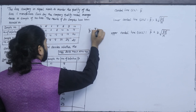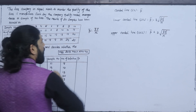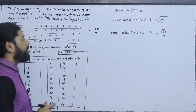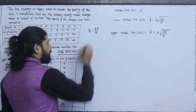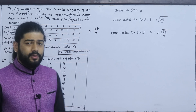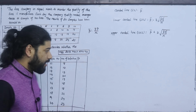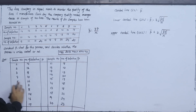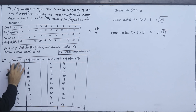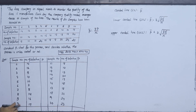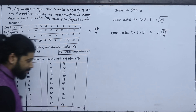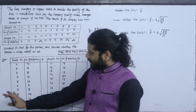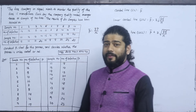P-bar equals the summation of P divided by n. To calculate the proportion, we set up a table. The sample numbers go from 1 to 10 — sample number 1, 2, 3, 4, 5, 6, 7, 8, 9, 10. We will fill in the proportions from the table.